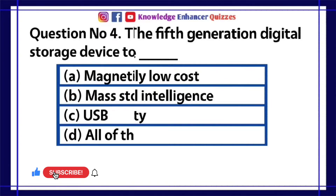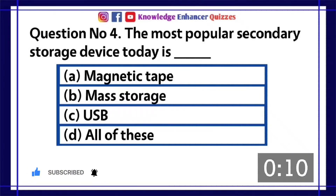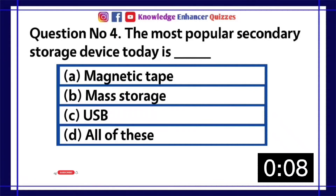Question number 4. The most popular secondary storage device today is dash. A. Magnetic tape. B. Mass storage. C. USB. D. All of these.